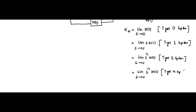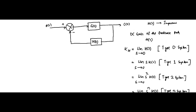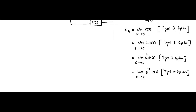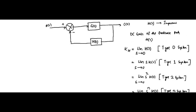Basically, s is multiplied with H(s) to cancel the s terms in the denominator so that we can get a finite, non-zero DC gain result. For type 0, no pole at the origin means no need to multiply any s. For type 1, we multiply s in the numerator to cancel the s in the denominator. For type 2, we multiply s² because there are two poles at the origin. This is the DC gain of the feedback path.